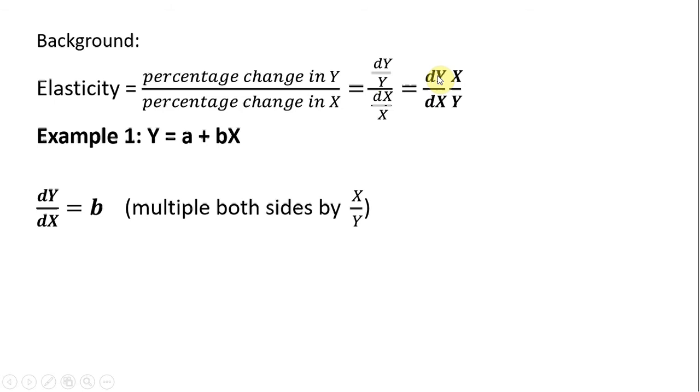So first thing we do to build this elasticity, we're going to get dy divided by dx, just a derivative of the equation with respect to x, it's just b. Next, we're going to multiply both sides by x divided by y. That will put us into this elasticity format. So doing that, we have the estimated elasticity of y with respect to variable x.